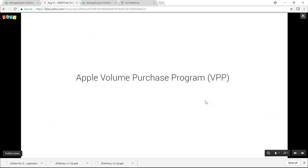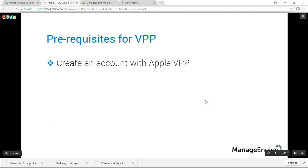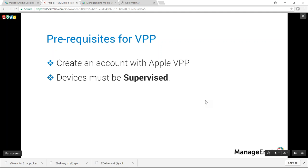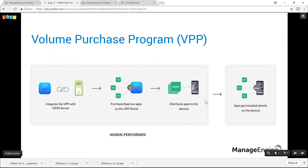For Apple Volume Purchase Program, the prerequisites are: you need a VPP account with Apple, and devices must be supervised. Supervision provides administrators additional control over the device. In MDM, the VPP workflow is: integrate VPP with the MDM server, purchase or approve apps on the VPP portal — these get automatically added to the MDM server — then distribute to devices where they install silently.